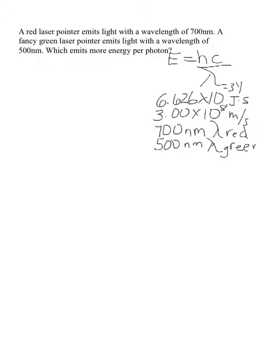For both, we want to solve for energy and see which one has the greater energy per photon. Before we go any further, remember that the speed of light is given in meters per second, but the wavelengths in this problem are in nanometers. So we need to convert our nanometers into meters so that the units are consistent and will cancel out.